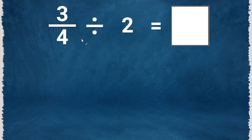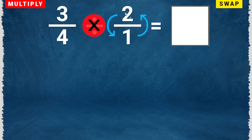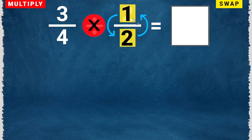Next, let's try dividing a fraction by a whole number. The first thing that you will do is rewrite the whole number into a fraction by putting a denominator of 1. So 2 will become 2 over 1. Then multiply — change this to multiply. Then swap the numerator and the denominator of the second fraction. So this will become 1 over 2.